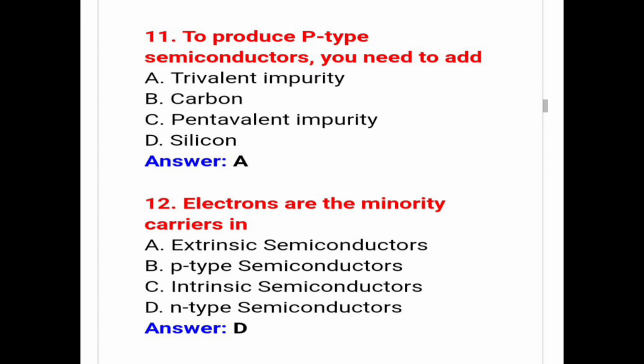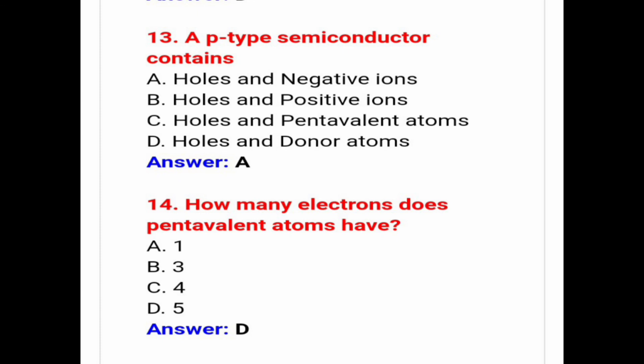Electrons are the minority carriers in which type: extrinsic semiconductor, p-type semiconductor, intrinsic semiconductor, or n-type semiconductor? Answer is option D — n-type semiconductor. Electrons are the minority carriers in n-type semiconductors. A p-type semiconductor contains holes and negative ions — answer is option A.